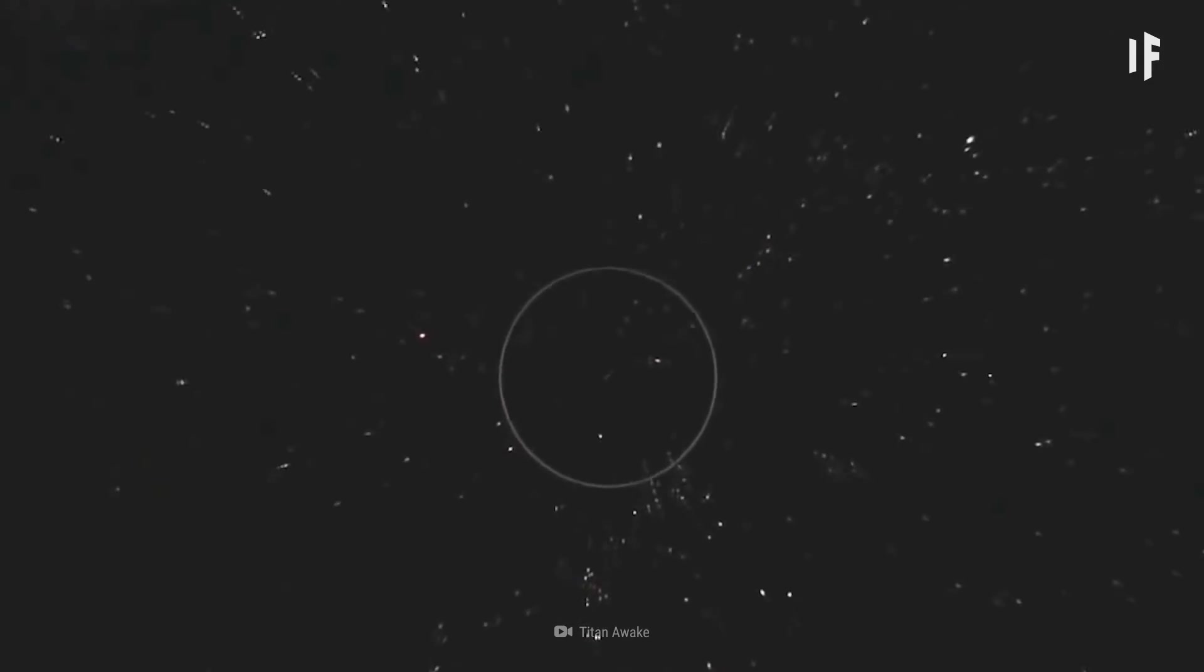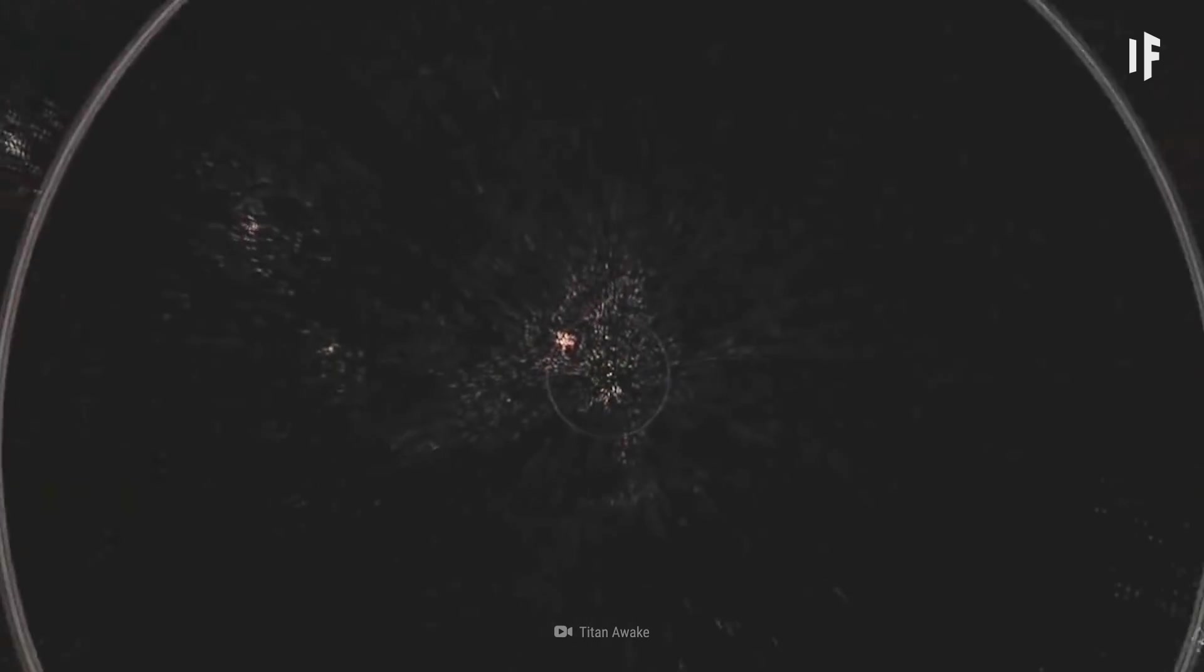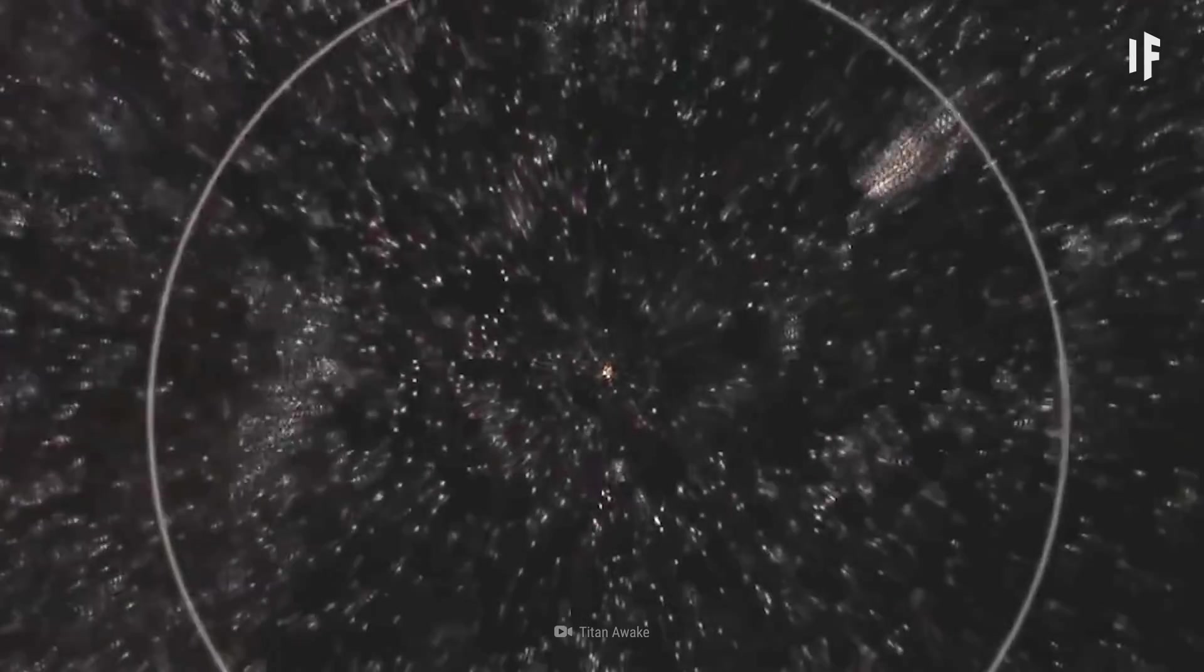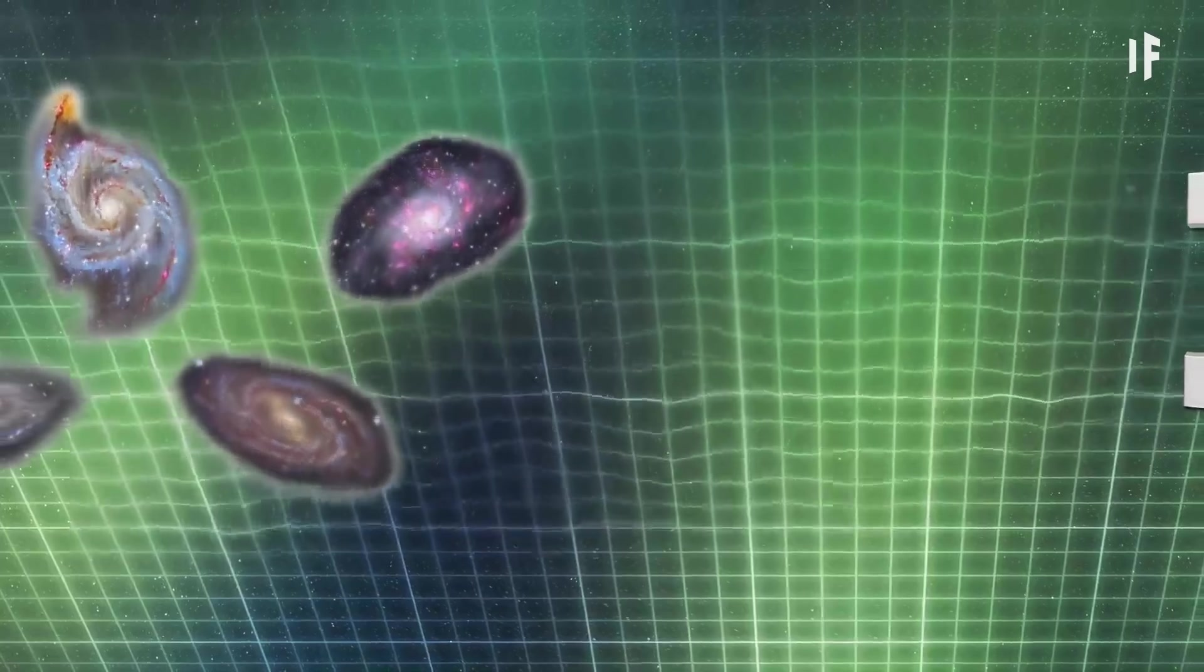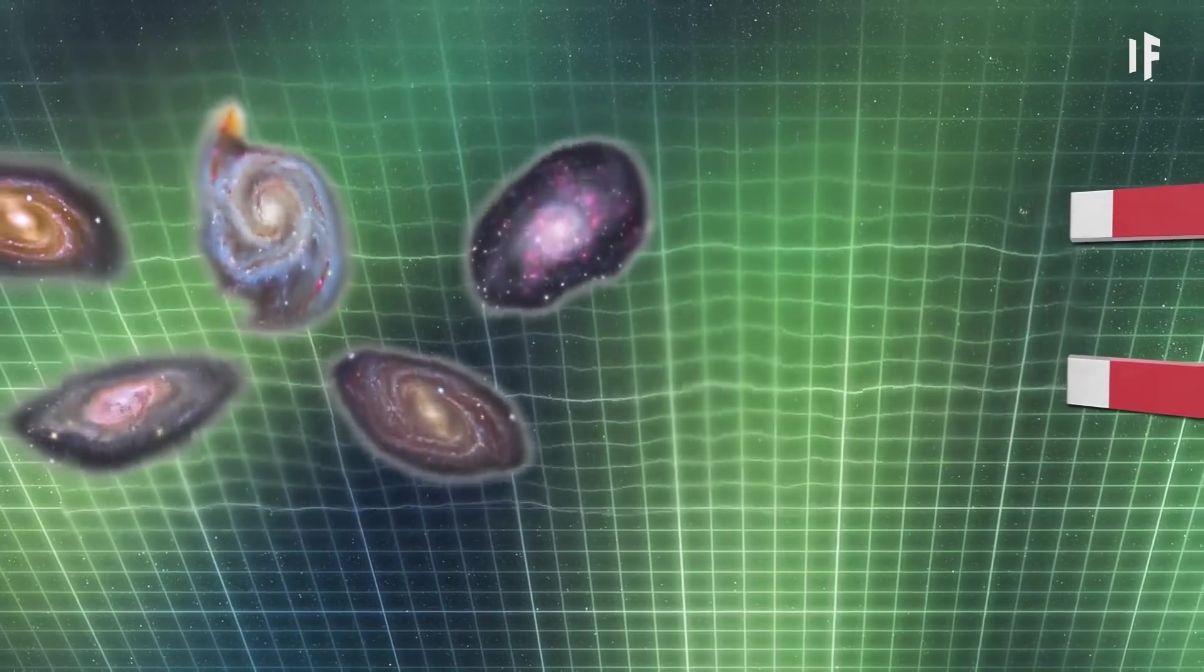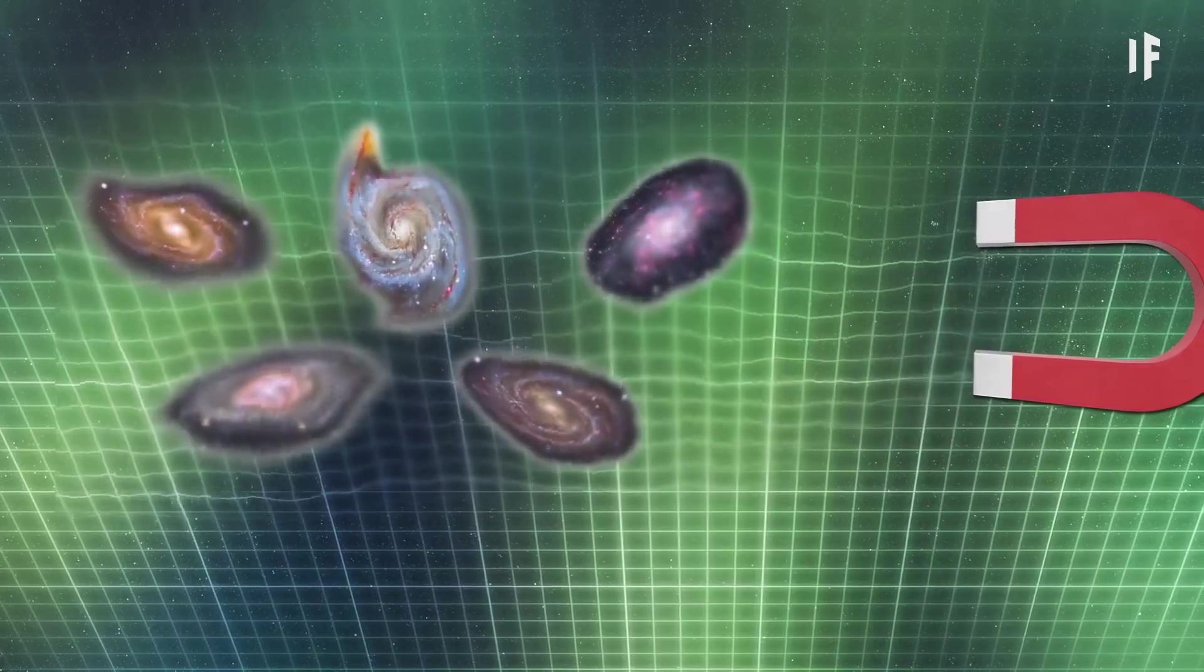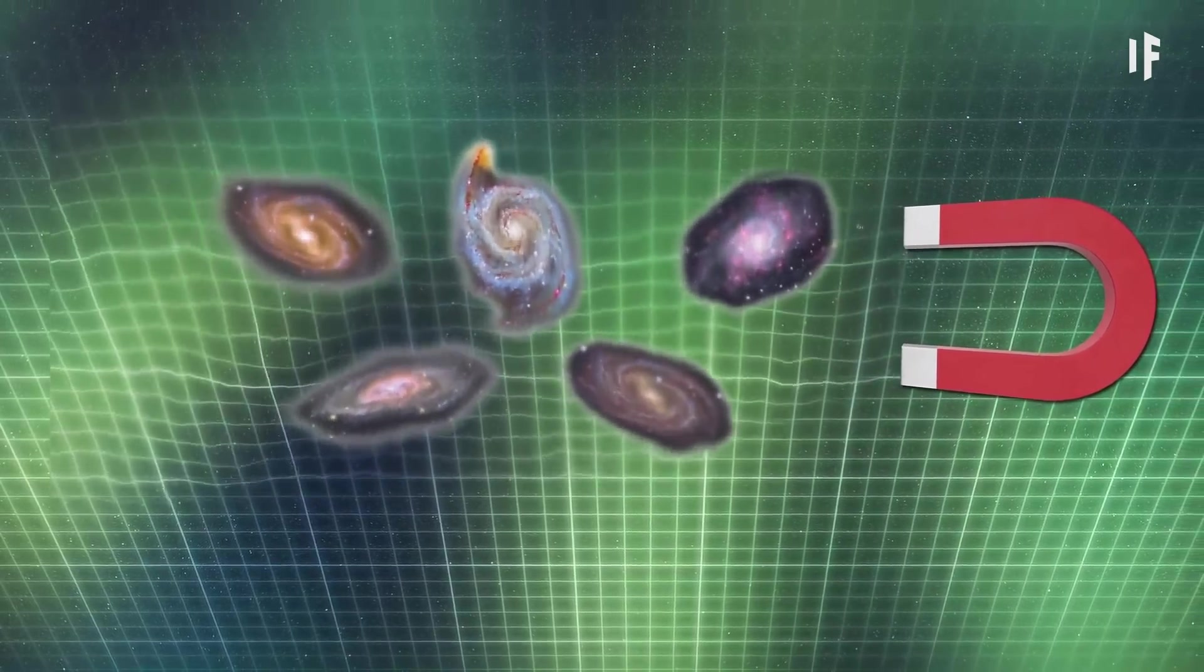Our Local Group belongs to an even bigger collection of galaxies called the Virgo Supercluster. And this supercluster belongs to an even larger supercluster known as Laniakea. The one thing all these clusters have in common is that they're all being pulled towards one specific spot, 220 million light-years away, known as the Great Attractor.